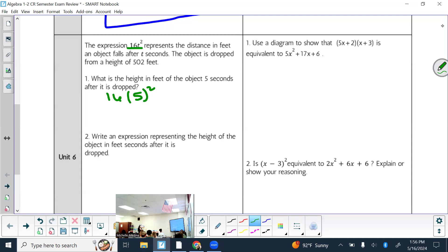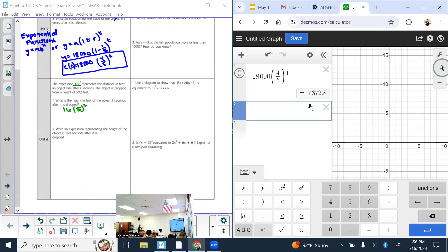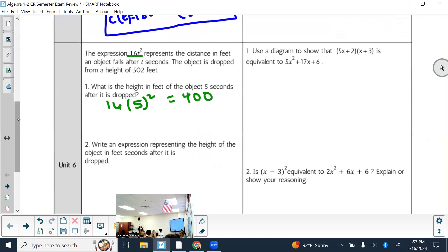You can just logically think about this. If you want to know the height in feet that the object is five seconds after it's dropped, and this right here tells me the distance in feet that is falling, I probably want to figure out how much it's falling first. Plug in that five for the T. Again, someone is going to do 16 times five first and then square it. Really it should be exponent first and it should equal 400, not 80 squared. Put it all in at once.